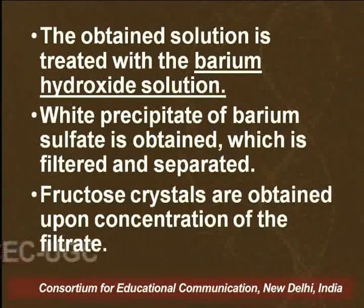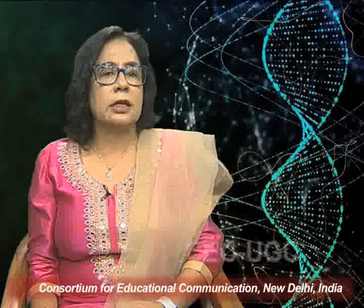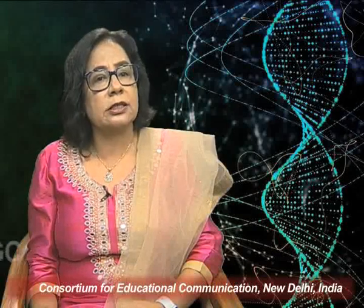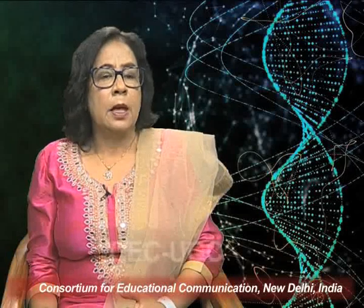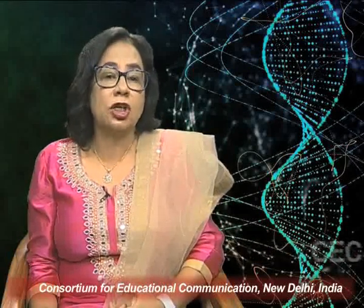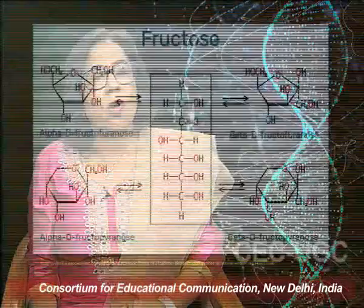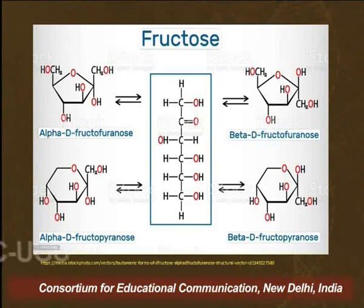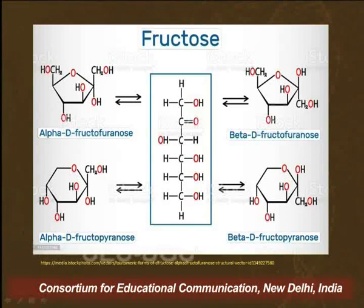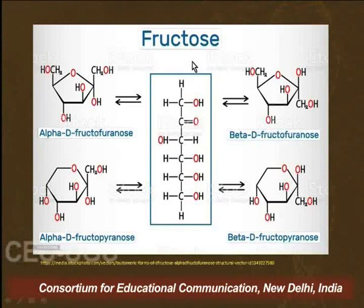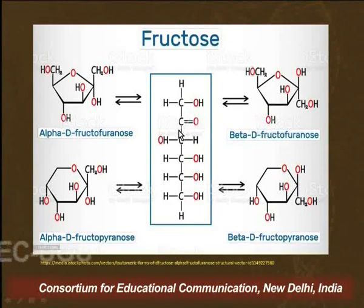Now I would like to discuss the properties of fructose. But before that, I would like to discuss how we can represent fructose, because once we are familiar with its structure, we will be able to understand its properties. As you can see on your screens, fructose has been represented by five structures. The middle structure is the Fischer structure. In Fischer structure, we write the longest carbon chain as the vertical chain with the highest oxidized end at the top. But in this case, the highest oxidized end is the carbonyl group — that is, the ketonic group — so this cannot be at number one; it is at number two.